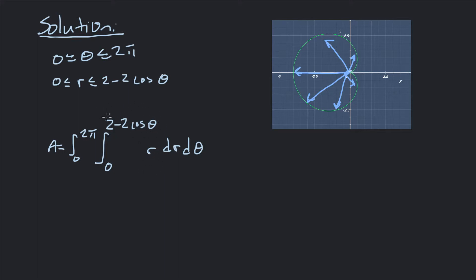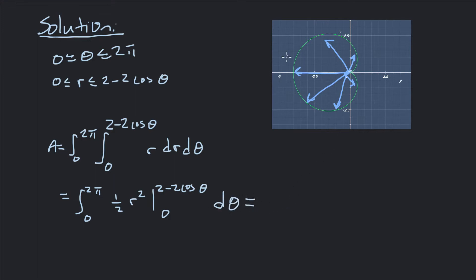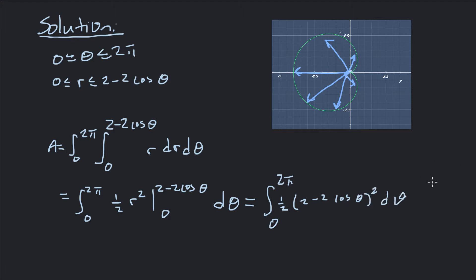We integrate r first — we absolutely have to do r first because there's a theta function in the bounds of the r integral. The theta integral stays from 0 to 2π. The r integral gives us ½r², evaluated from 0 to 2 - 2cos(θ), dθ. Plugging in the bounds: substituting r = 2 - 2cos(θ) gives us that squared, and plugging in r = 0 gives zero. So we get the integral from 0 to 2π of ½(2 - 2cos θ)² dθ.